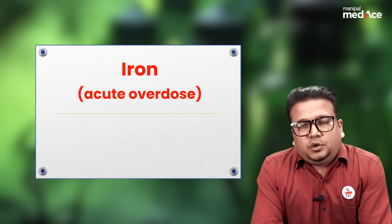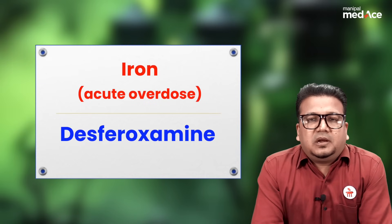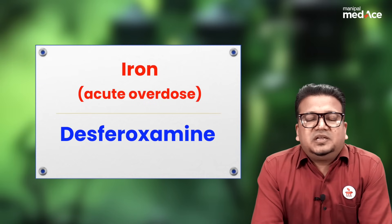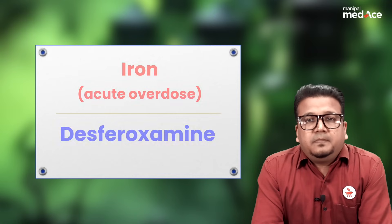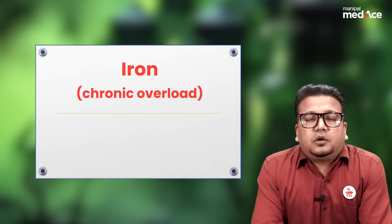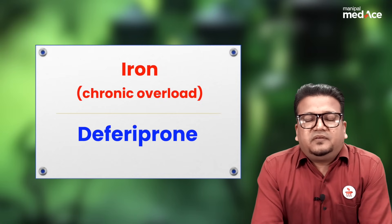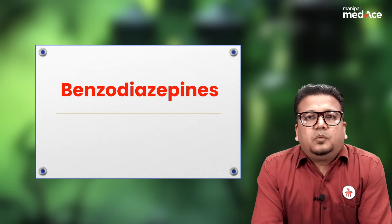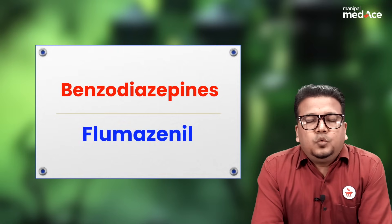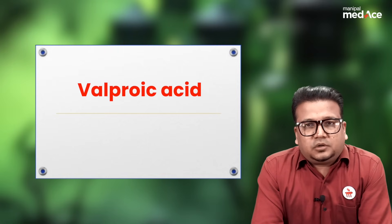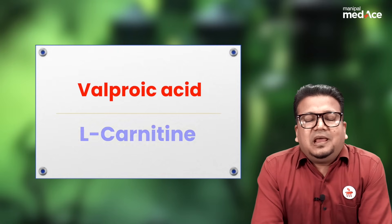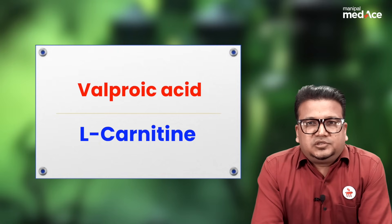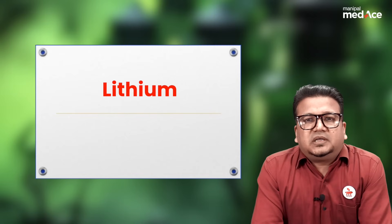For acute iron overdose, we give injectable iron chelator deferoxamine. However, for chronic iron overload, the oral iron chelator deferiprone is used. For benzodiazepines, we give flumazenil. For valproate toxicity, L-carnitine is used.